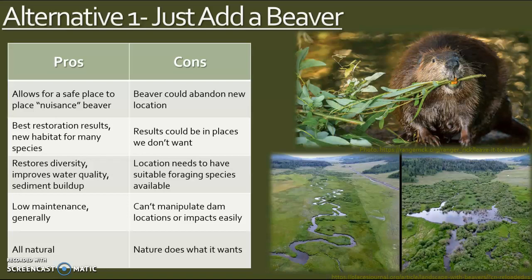Cons include the fact that beavers could abandon a new location, which puts you right back at square one. Their damming results could be in places we don't want — we can encourage them in certain areas, but they could just ignore all of it and do what they want. The location also needs to be actual beaver habitat with suitable foraging species available or else the beaver will not stay. And once it's started, we cannot manipulate dam locations or impacts as easily because at that point it's established wildlife habitat. Nature does what it wants, so no matter how much we predict, it could go completely sideways.